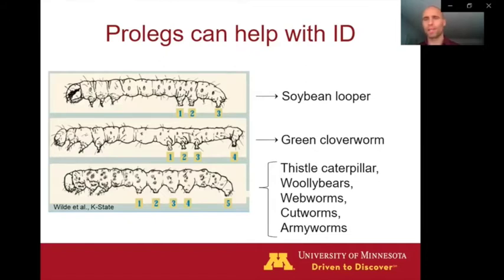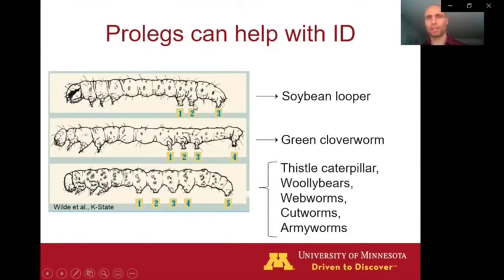I want to point out here one key thing to look at, which is what we call the prolegs on the caterpillars. Up here we've got the head of these three different types of caterpillars. Here we've got the thoracic legs — these are the true legs, and there's three pairs on all three of these caterpillars. But then when you get back towards the tail end, you see these kind of false legs — we call them prolegs. On this top one, there's one pair, two pair, and then a third pair at the tip of the abdomen. So the ones in the middle are the abdominal prolegs and the ones at the end are the anal prolegs.